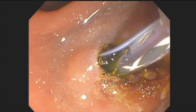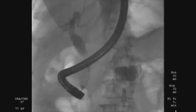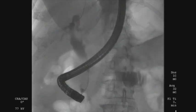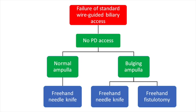Following the sphincterotomy, the bile duct orifice was clearly visualised and was cannulated in the standard manner. The cholangiogram revealed a biliary stricture and a metal biliary stent was placed. In cases of failure of standard wire-guided biliary cannulation during an ERCP where pancreatic duct access is not possible, the possible options are freehand needle-knife sphincterotomy and fistulotomy, depending on the size of the major papilla. Each technique will now be explained in greater detail.